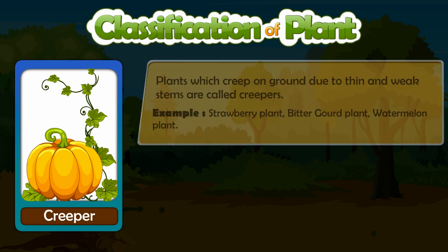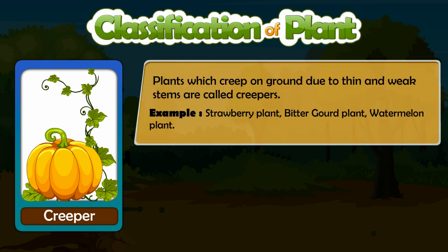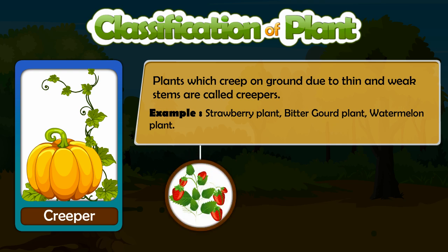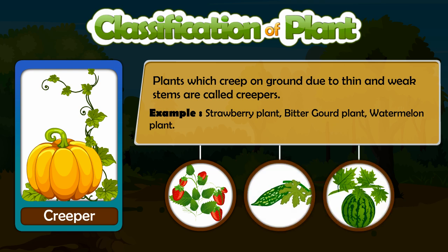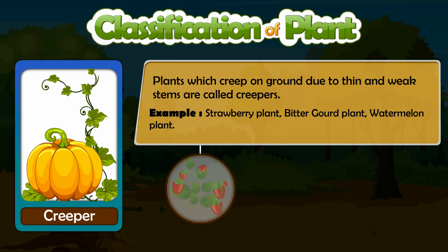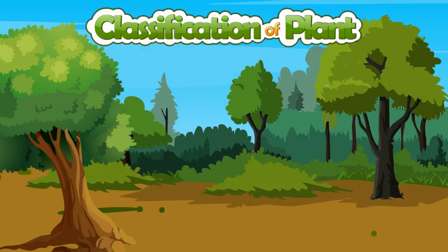Plants which creep on ground due to thin and weak stems are called creepers. Examples of creepers: Strawberry plant, Bitter Gourd plant and Watermelon plant. Thank you.